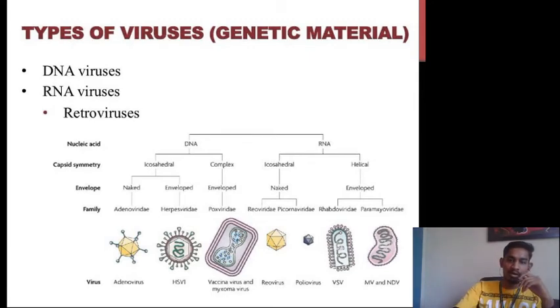In the RNA viruses, there are further two types on the basis of capsid symmetry: icosahedral and helical. The icosahedral is further divided into naked enveloped icosahedral viruses with two families, reoviridae and picornaviridae, the examples of which are reovirus and poliovirus.